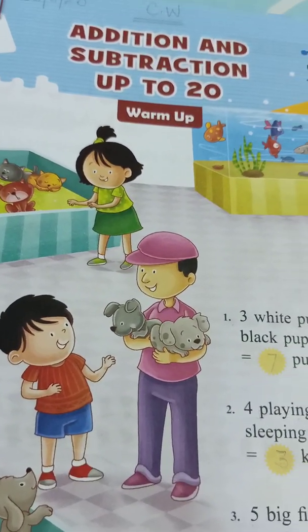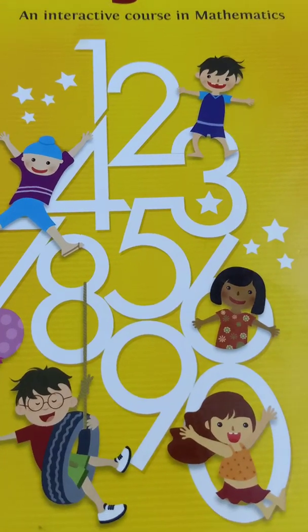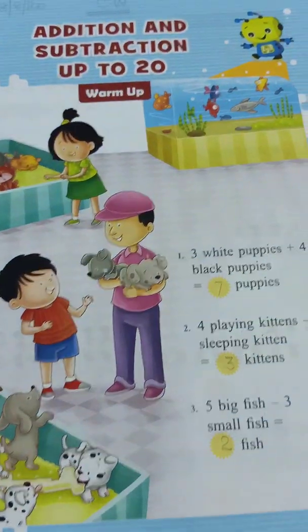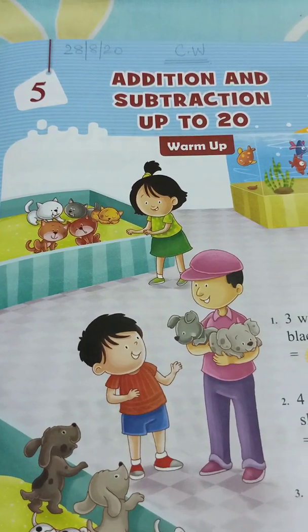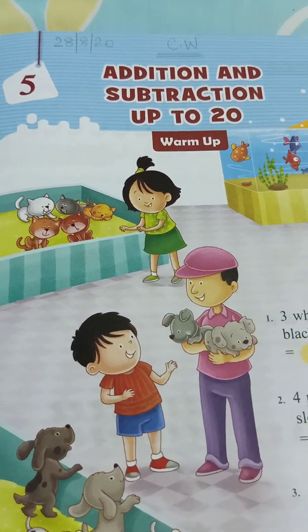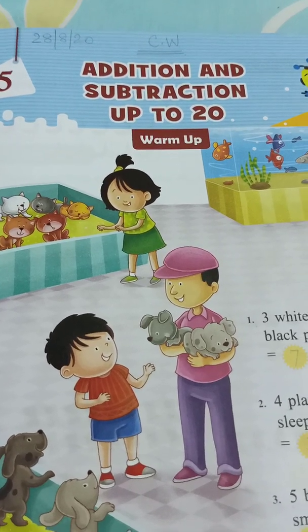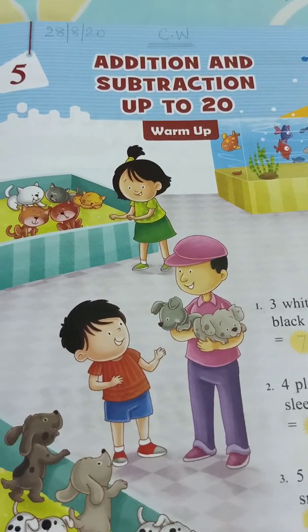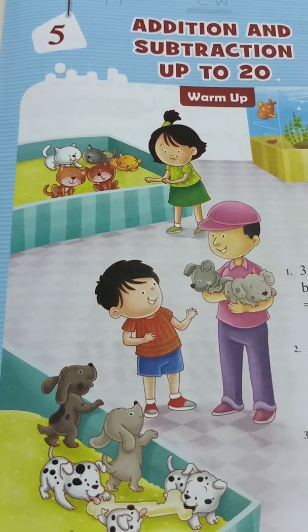Good morning children. Take out your Living Maths book. Take out chapter number 5, that is addition and subtraction up to 20. First write the date and CW classwork children. Done.